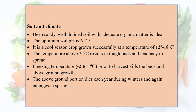Though a cool season crop, it cannot tolerate heavy frost. Temperatures above 22°C result in top buds and tendency to spread. Freezing temperatures from -2°C to 1°C prior to harvest kill the buds and above-ground growth. Above-ground portions die each year during winters and again emerge in spring.